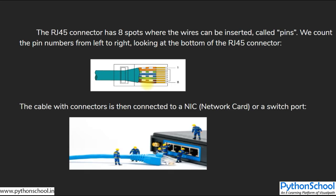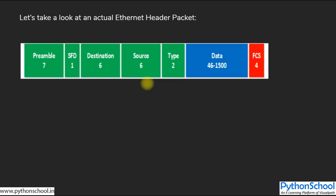Now that we understand what Ethernet is and its benefits, let's look at how the Ethernet packet header actually looks. There are a total of seven fields. One of the greatest things about Ethernet is that although we have different standards, they all use a common Ethernet frame. This frame hasn't changed much since the original Ethernet standard from the 1970s.